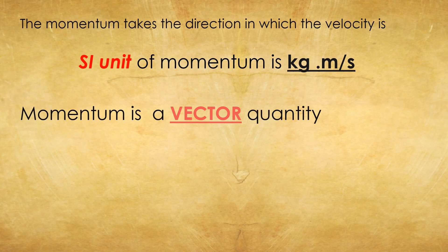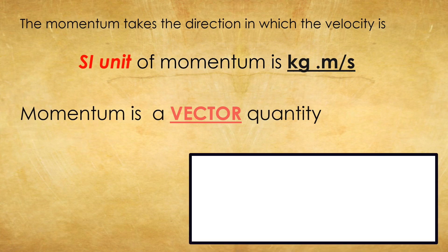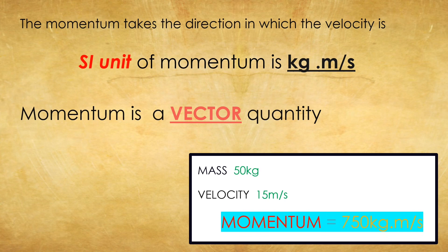Let us solve a problem. Consider mass = 50 kg and velocity = 15 m/s. The momentum of this body will be 750 kg·m/s. That's all about Newton's Second Law.